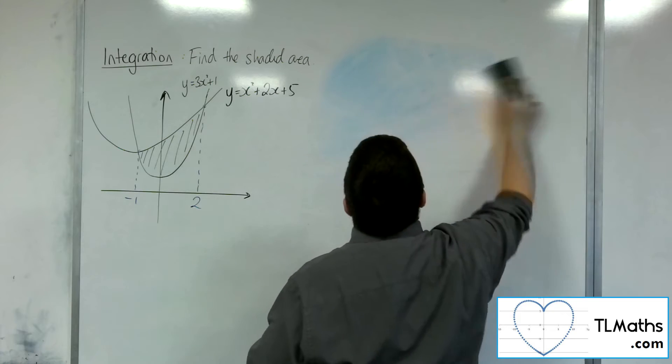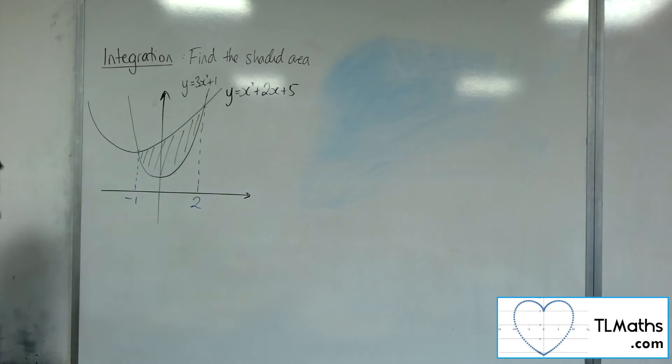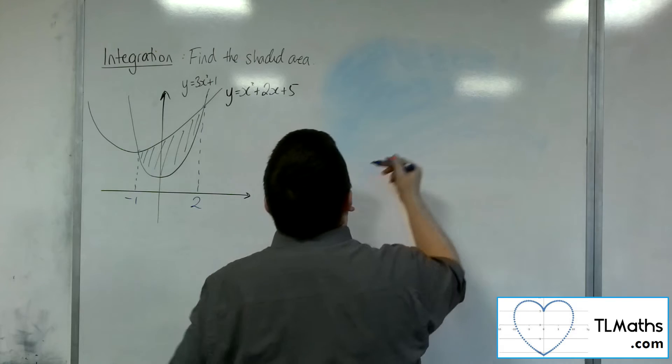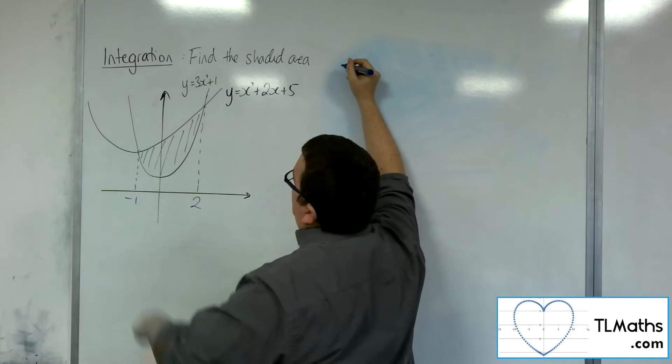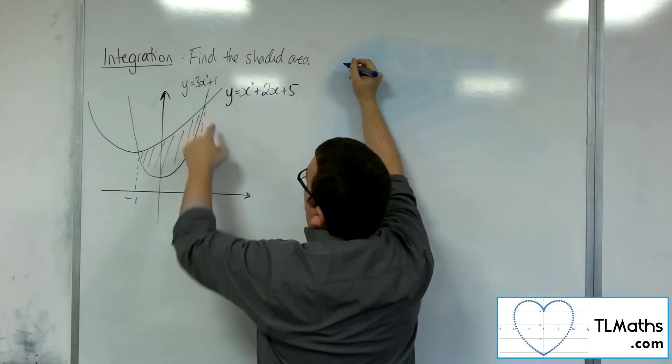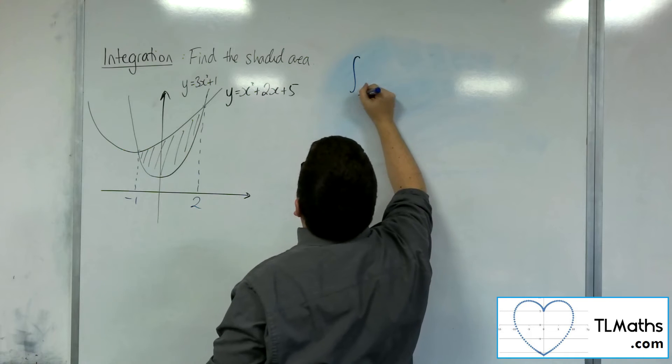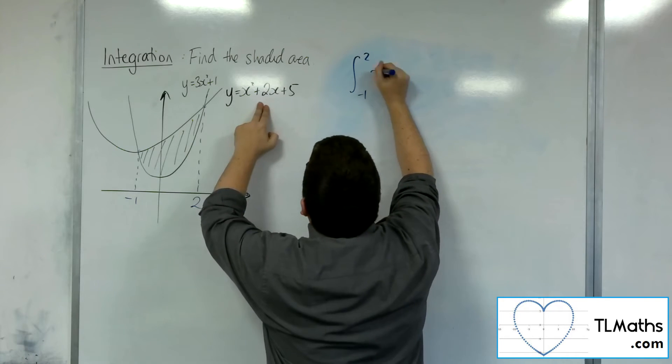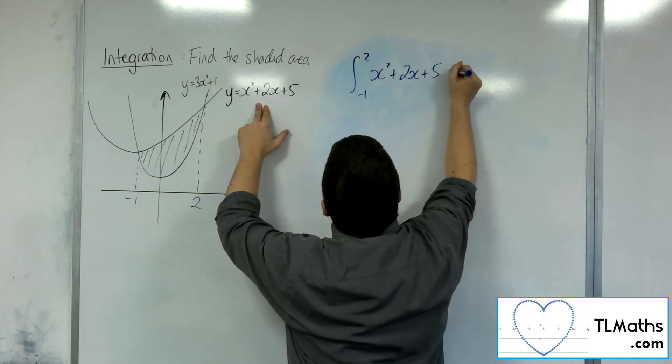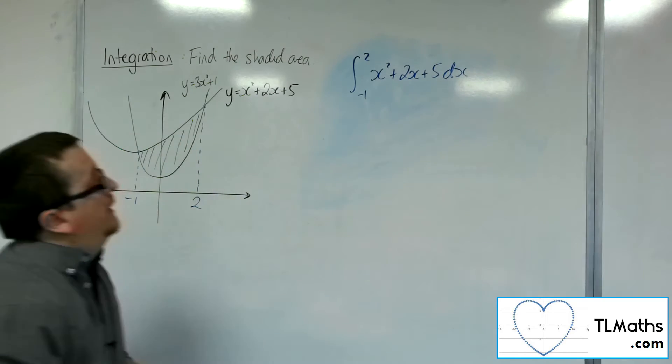It's gone very blue. New pens. Right, so if I first of all find the area between the minus 1 and 2 of the x squared plus 2x plus 5, that's what I'll do first.